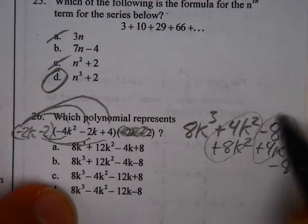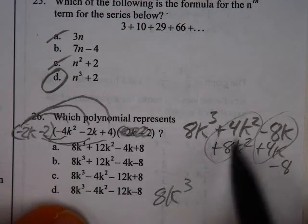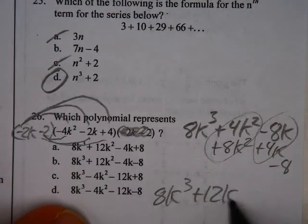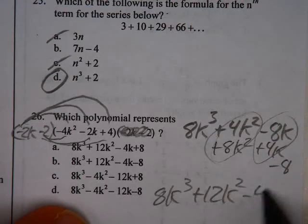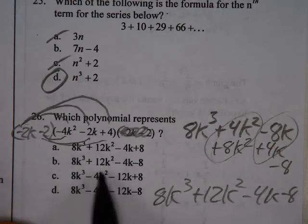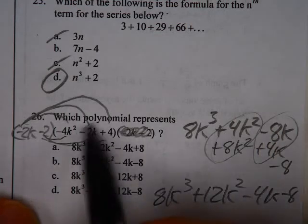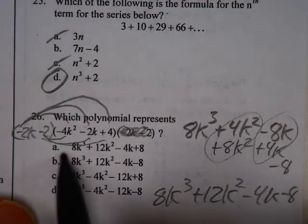The last item there is a minus 8. I kind of stacked them this way because I got like terms there and like terms there. It gives me 8k to the third power. These guys will give me a total of 12k squared, that gives me a negative 4k and then a minus 8. And that looks like we're up in the top zone there, it's a minus 8, the 4 and the negative 2. So the answer is b.